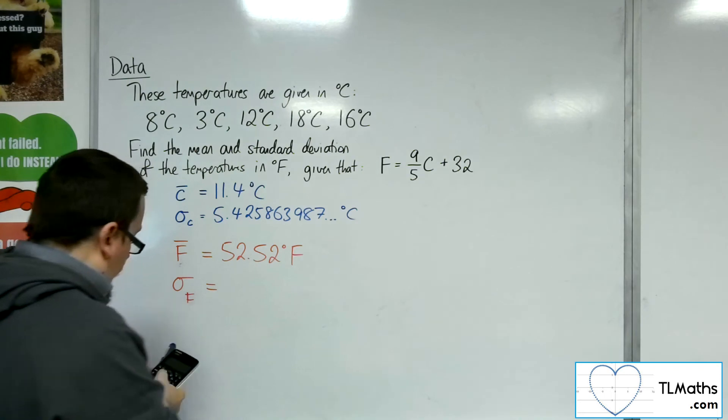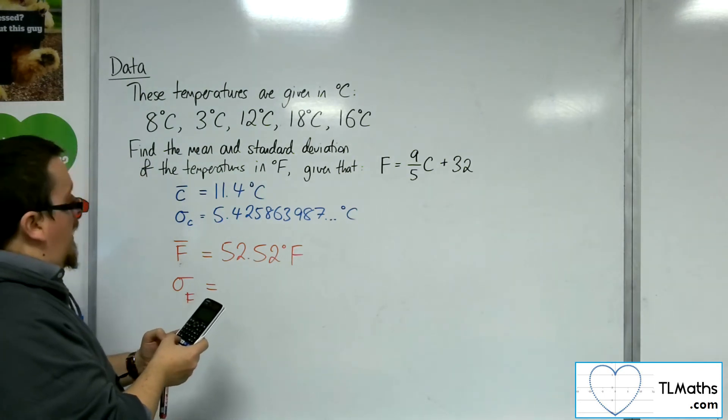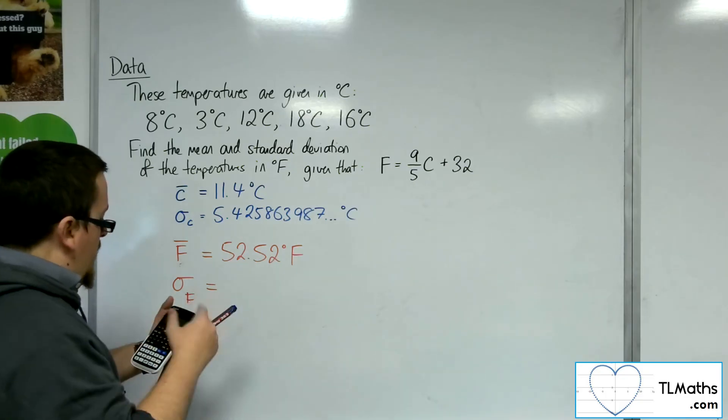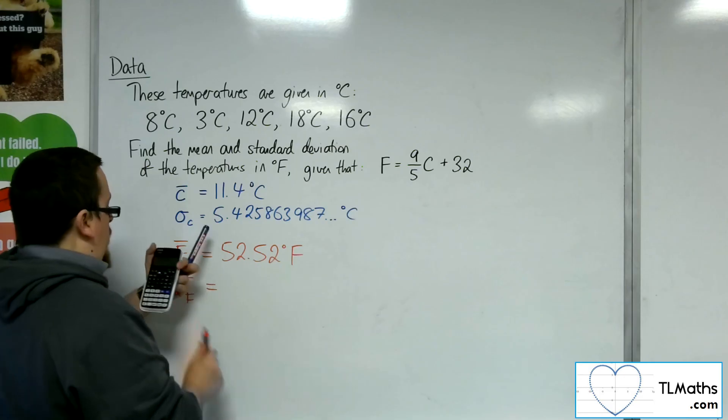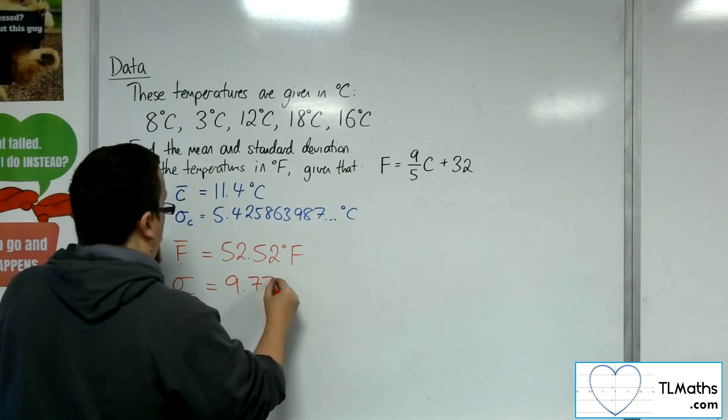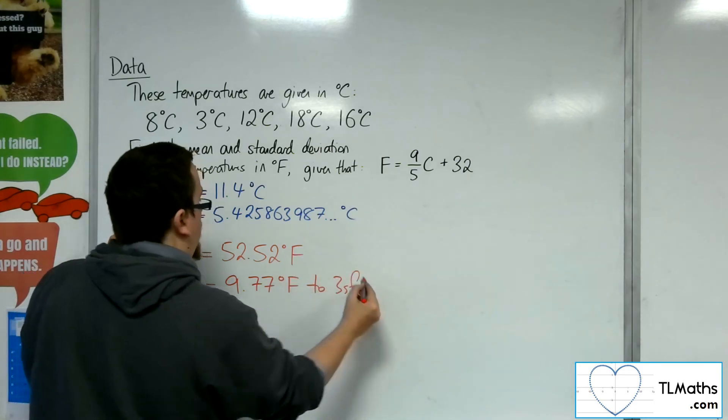So 9/5 times by 5.425863987. And that gets me 9.7665, etc. So to 3 significant figures is 9.77 degrees Fahrenheit to 3 sig fig.